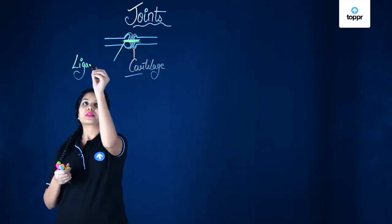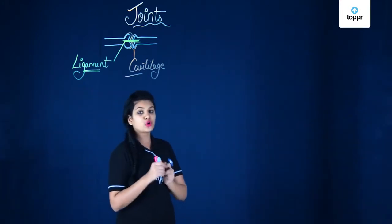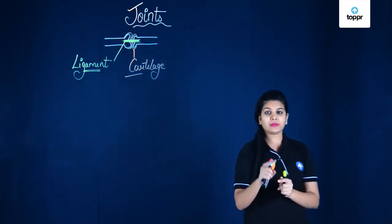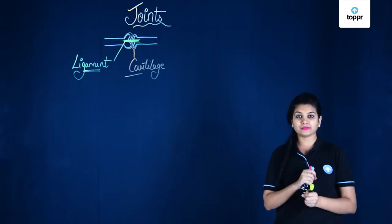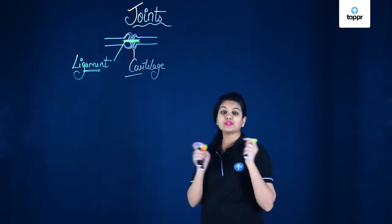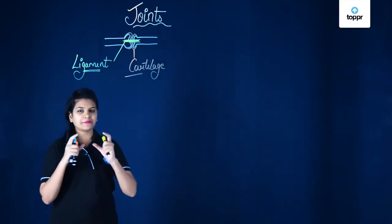The bones are connected to each other with a band-like structure. This band has a name which is ligament. Ligament is a band-like structure which connects or joins the two bones together. We have studied that bones and muscles are connected with the help of a tendon, so tendon connects bones and muscles while ligament connects bones to bones. Both ligament and tendon are fibrous in nature but connect different things.